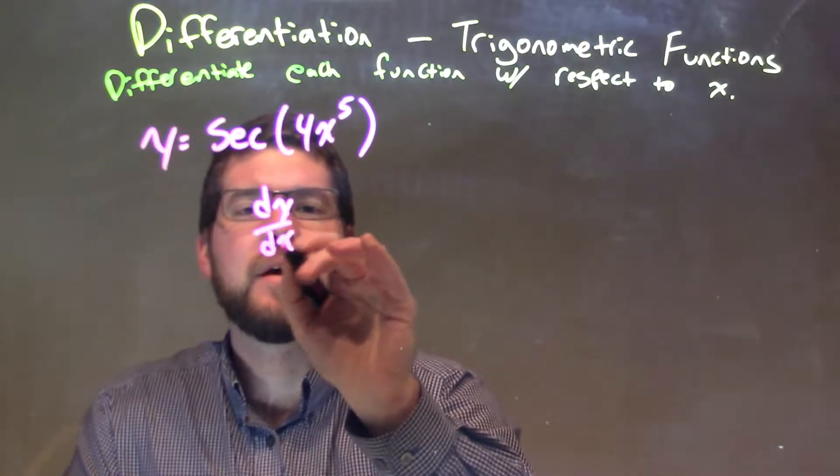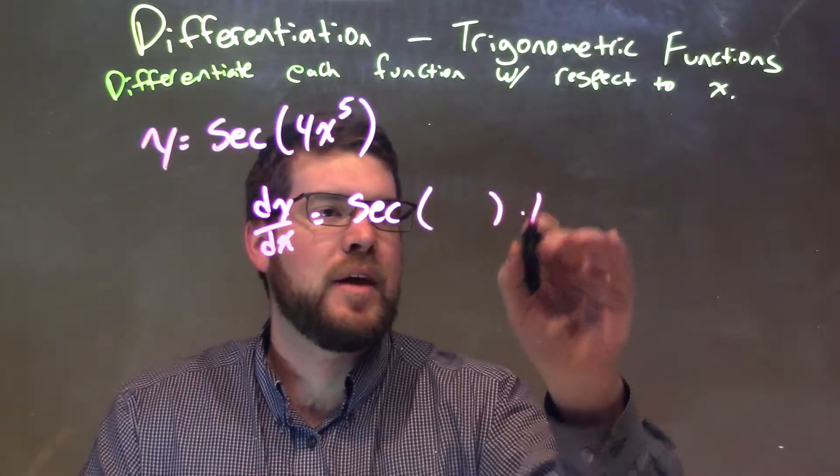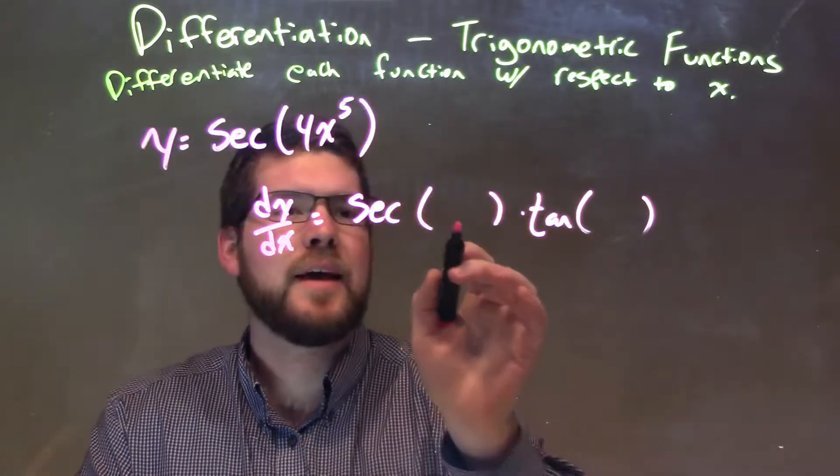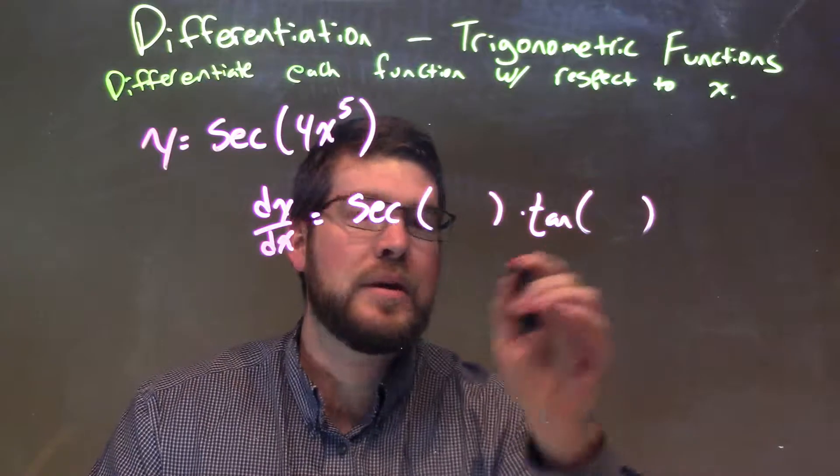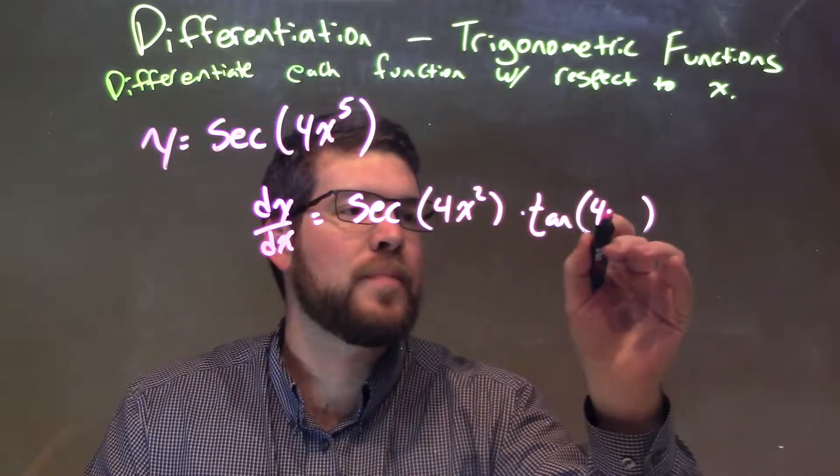So dy dx here is equal to secant, parentheses here, times the tangent of whatever is in the parentheses. So we're going to take that knowledge of derivative of secant and plug 4x squared into each one of these parentheses.